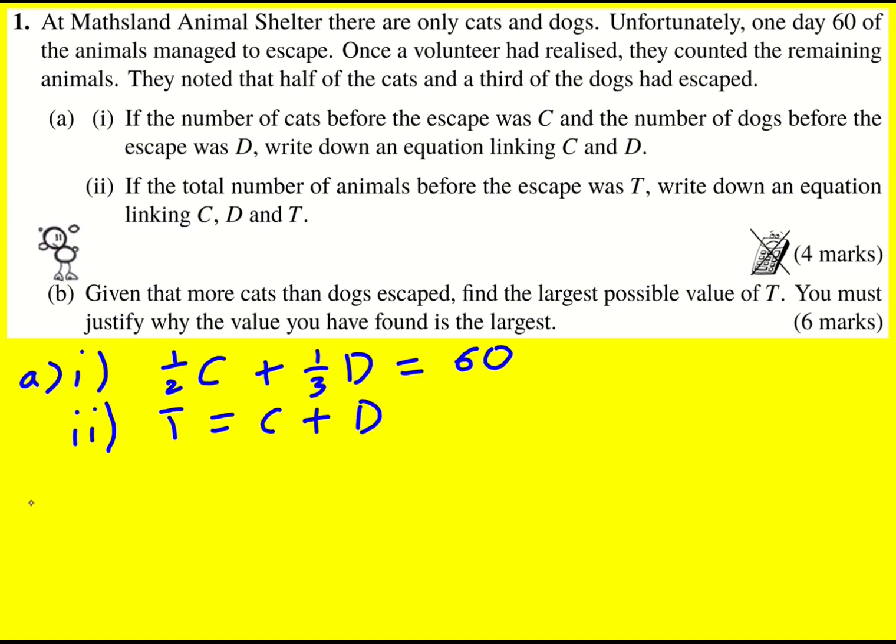Let's take a look at Part B. Given that more cats than dogs escaped, find the largest possible value of T. Well, the number of cats escaped was one-half C, where C was the original number of cats, so that has got to be greater than one-third D. Just going to write that information down mathematically.